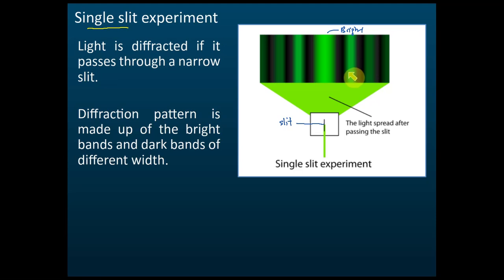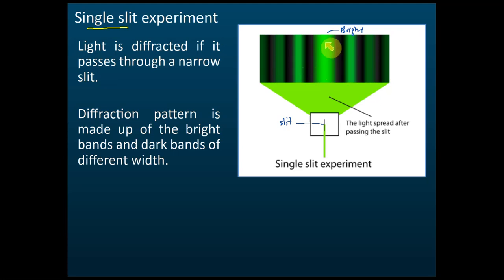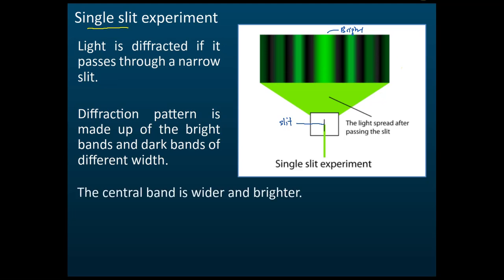In exams, it is usually an objective question — they give you a few patterns and ask which one is correct. Sometimes they will give you something similar but with a dark band in the middle, which is not correct for a single slit experiment. The bright band should be in the middle. You can see that the bright band in the middle is much bigger than the bands at the sides, and the brightness decreases from the center outward.